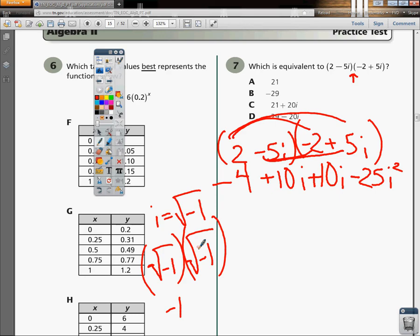what I'm really doing is looking at negative 25 times negative 1 because i squared, by its definition, would be negative 1.